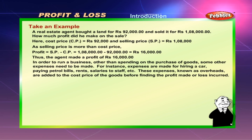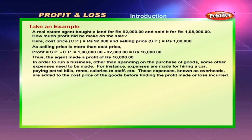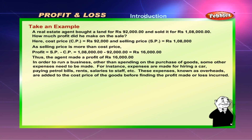Take an example. A real estate agent bought land for rupees 92,000 and sold it for rupees 1,08,000. Here, cost price (CP) equals rupees 92,000 and selling price (SP) equals rupees 1,08,000. Since the selling price is more than the cost price, profit equals SP minus CP, which equals 1,08,000 minus 92,000, which equals rupees 16,000. Thus the agent made a profit of rupees 16,000.